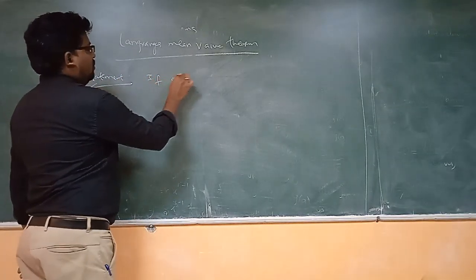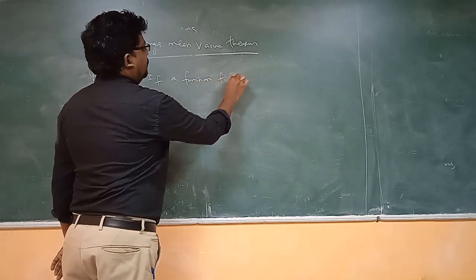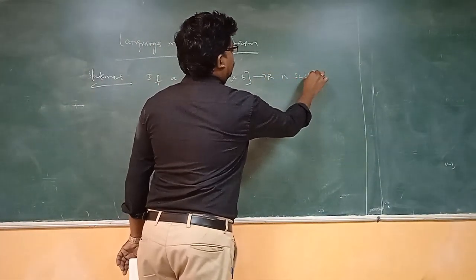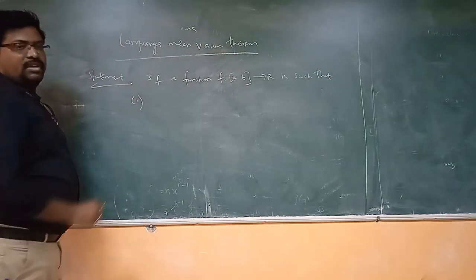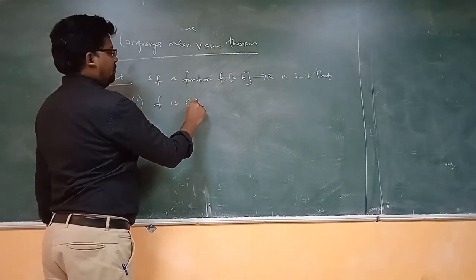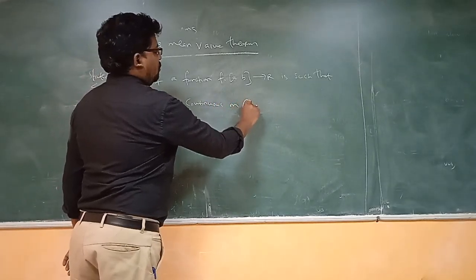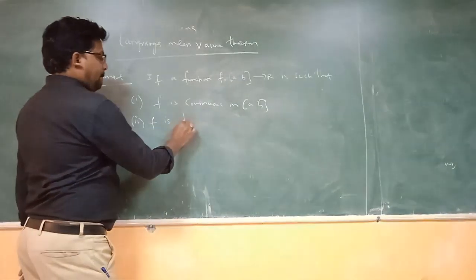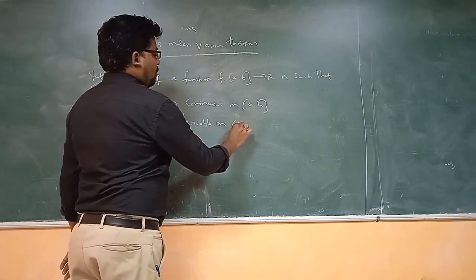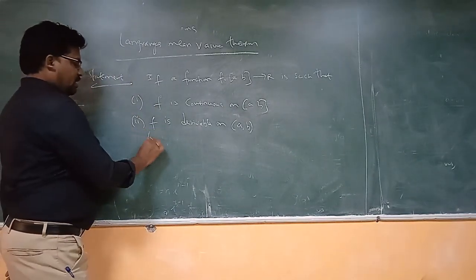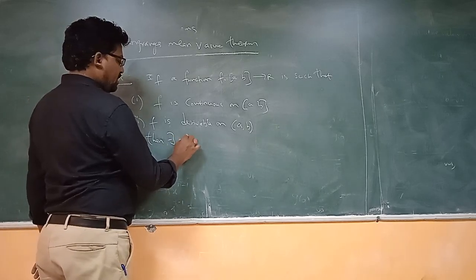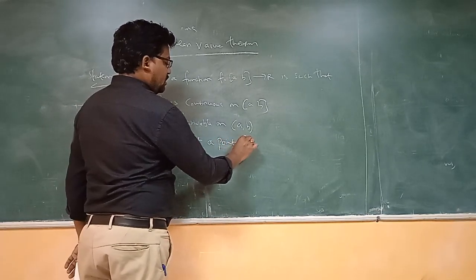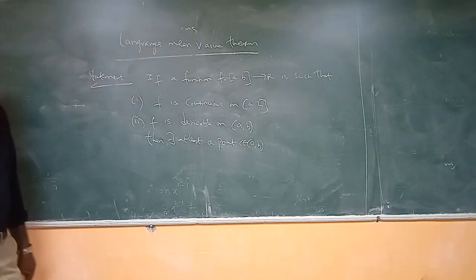If a function f maps closed interval [a, b] to R, and if f is continuous on closed interval [a, b], and if f is differentiable on closed interval [a, b], then there exists a point c in [a, b] such that...